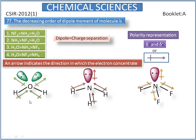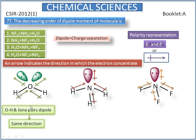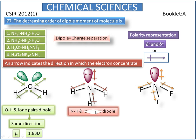In the water molecule, the bond pair dipoles and the lone pair dipoles are in the same direction, so its value will be large. Similarly, in ammonia, the bond pair dipoles and the lone pair dipoles are also in the same direction, so its value will also be large.